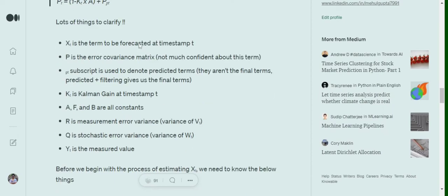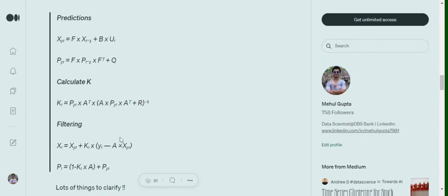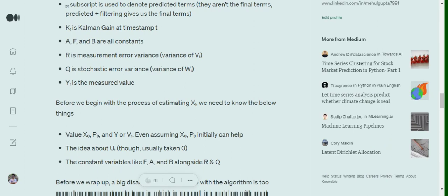So if you look into it, X_t is the term to be forecasted at timestamp t. Forecasted or the actual value that we wish to get. It's the final value that we wish to get. P is the error covariance matrix. Nothing I really couldn't find much about on the internet. Pt is the subscript used to denote predicted terms. They aren't the final terms as I said you earlier. Prediction plus filtering gives us the final terms. K_t is the Kalman gain at timestamp t. Kalman gain is the Kalman constant that we are talking about that is getting used. A, F, B that are getting used are all constants. R is the measurement error. Q is the stochastic error variance. R is the measurement error variance, variance of the V_t that we saw in the equation earlier. We were trying to satisfy two equations. Q is the stochastic error variance and Y_t is the measured value.